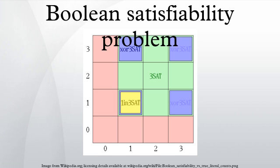For example, x1 is a positive literal, NOT x2 is a negative literal, and 'x1 OR NOT x2' is a clause. A formula in conjunctive normal form such as '(x1 OR NOT x2) AND (x2 OR x3) AND (NOT x1)' has first and third clauses that are Horn clauses, but the second clause is not. The formula is satisfiable by choosing x1 equals false, x2 equals false, and x3 arbitrarily.